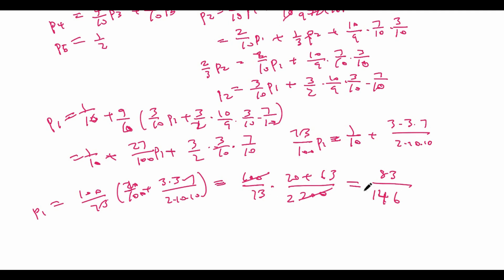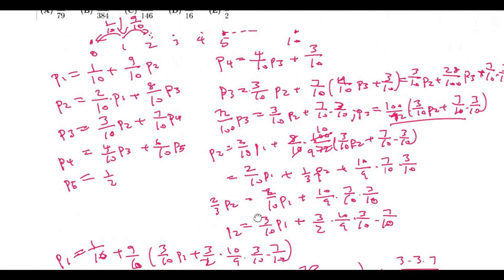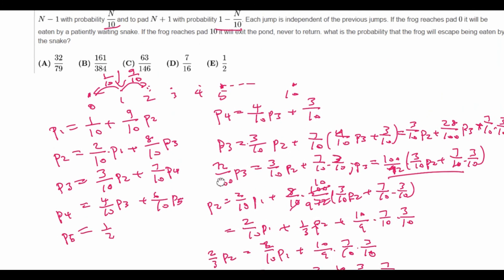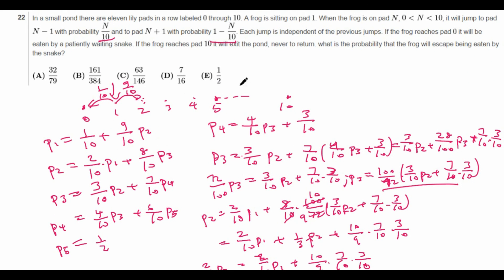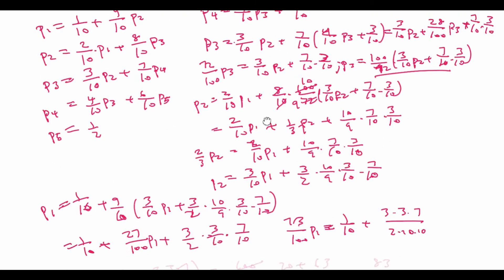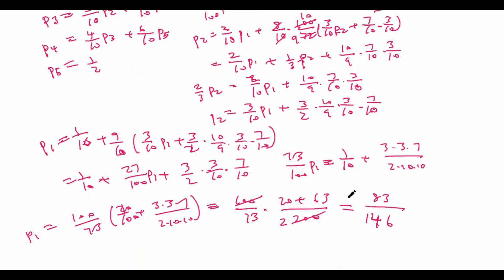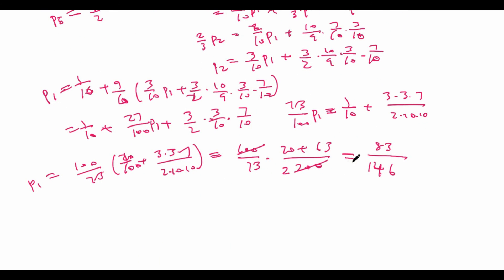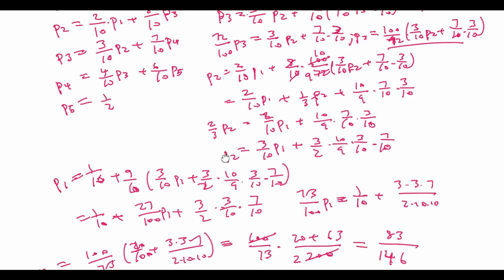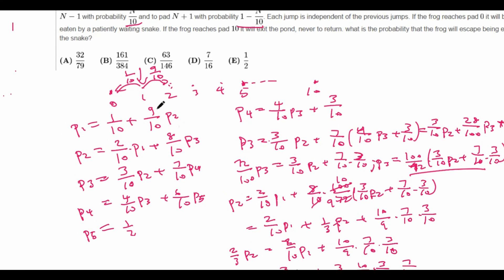So is this our answer? Actually, not quite, because remember we were trying to find the complementary probability — the probability that it's not eaten by the snake. This p1 is the probability that it is eaten. So the probability that it escapes is 1 minus 83 over 146, which equals 63 over 146. Checking the answer choices — indeed, that is choice C. So C is the correct answer and we are done.